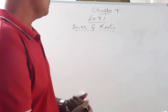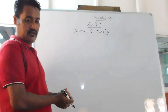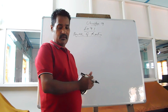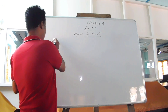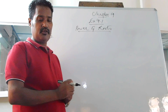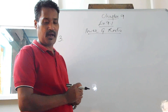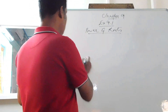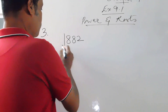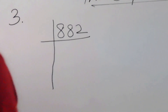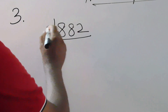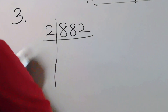Today through this video let us learn Exercise 9.1, question number 3. Question number 3 is: express 882 as the product of powers of its prime factors. To find out its prime factors, you will have to factorize it. Since 882 is an even number, you divide it by 2.